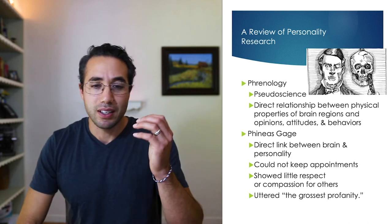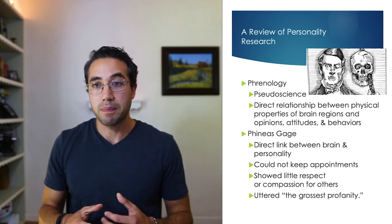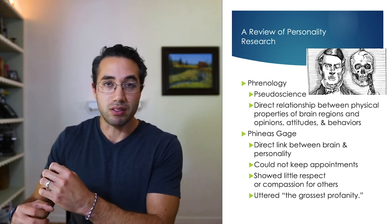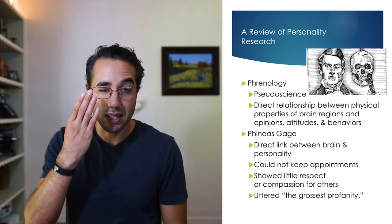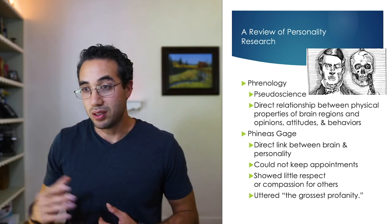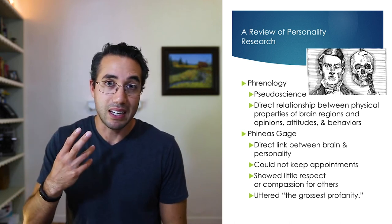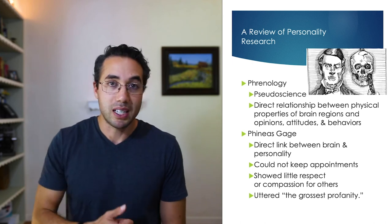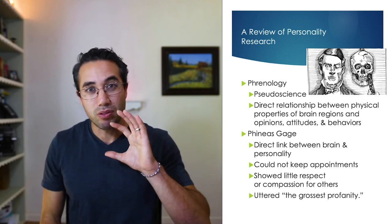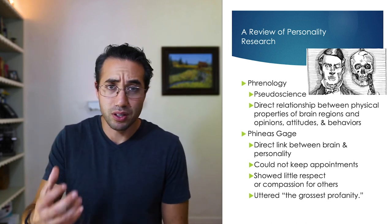It wasn't until the case of Phineas Gage that a direct link between the brain and personality was established. Phineas Gage was a railroad worker, and there was a mishap with explosives that shot a huge steel rod up through his skull. He lived — he walked to the doctor and was operated upon — but he completely changed in personality afterward. He could not keep his appointments, showed little respect or compassion for others, and uttered the grossest profanity. This guy went from a kind-hearted family man to someone who couldn't make it in society. It really changed his personality.